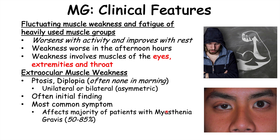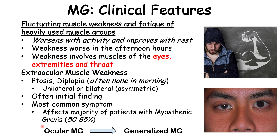These eye findings affect a majority of patients with myasthenia gravis, anywhere from 50 to 85%. If a patient wakes up with no ptosis and by the end of the day has severe ptosis or can't even open their eyes, that very much increases the possibility of myasthenia gravis. Patients who only have extraocular muscle weakness are considered to have ocular myasthenia gravis, and often a patient will start with ocular myasthenia gravis and over time progress to generalized myasthenia gravis where other muscle groups are affected.